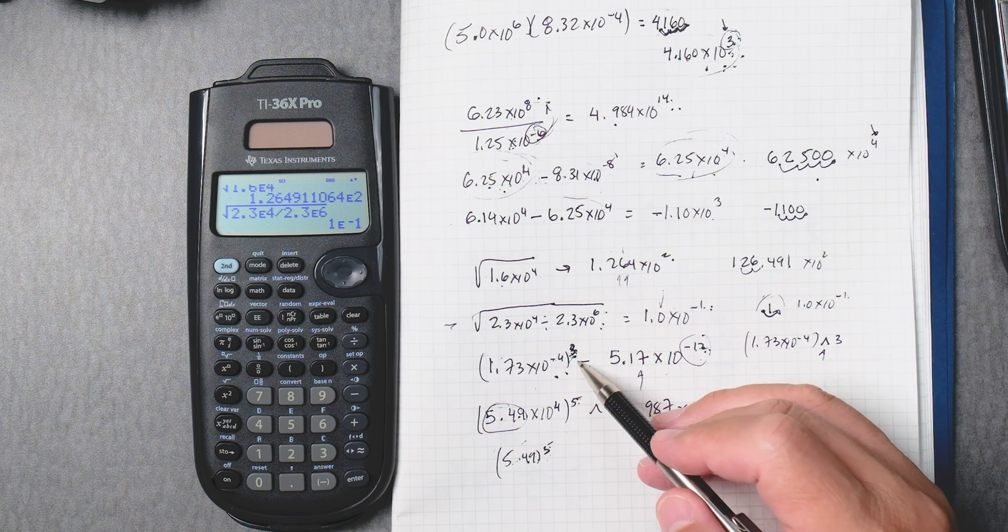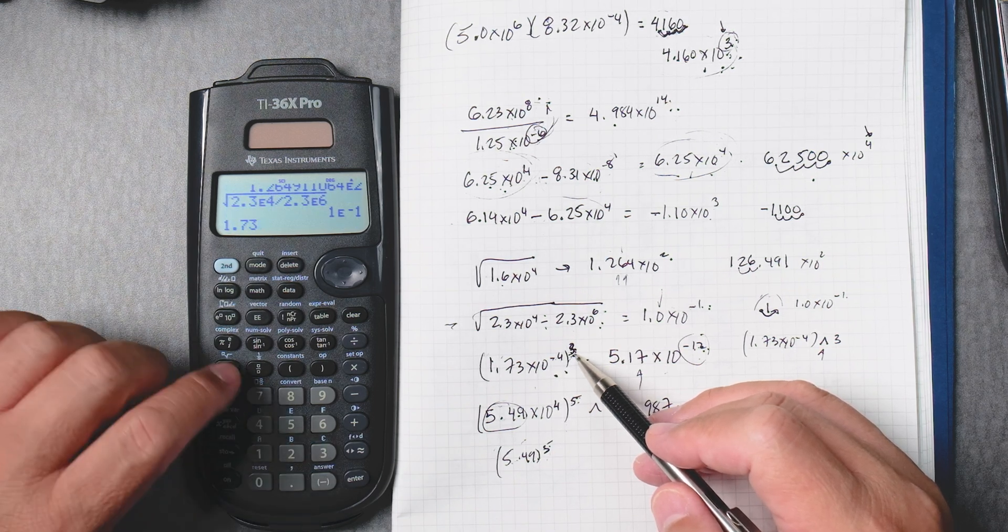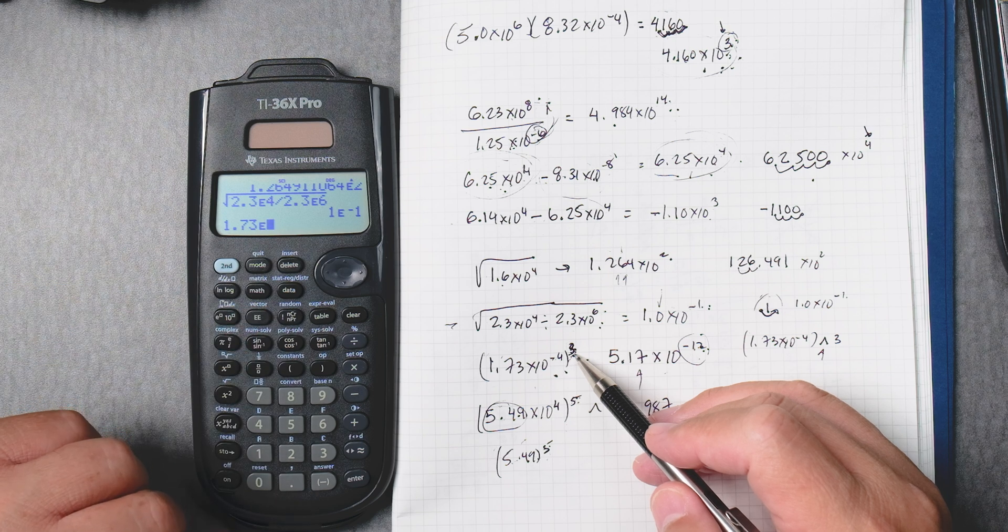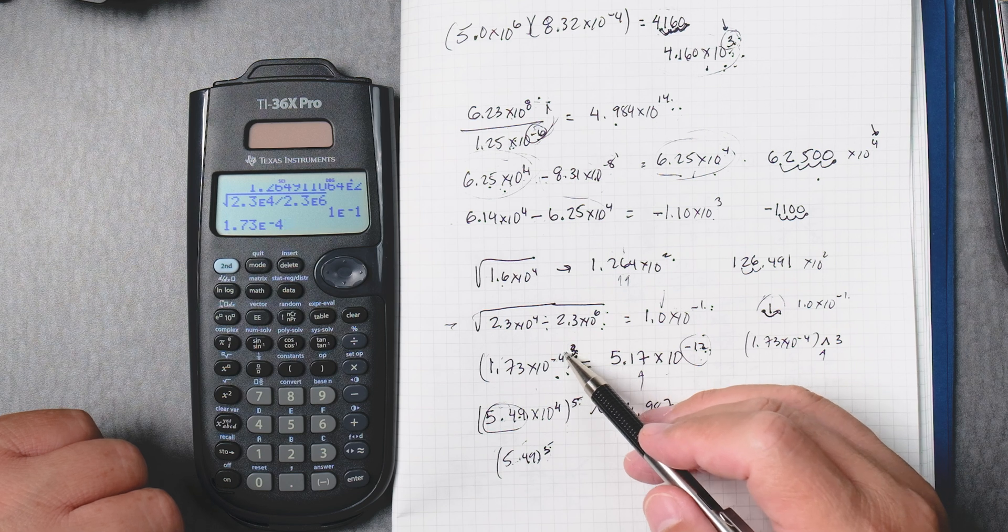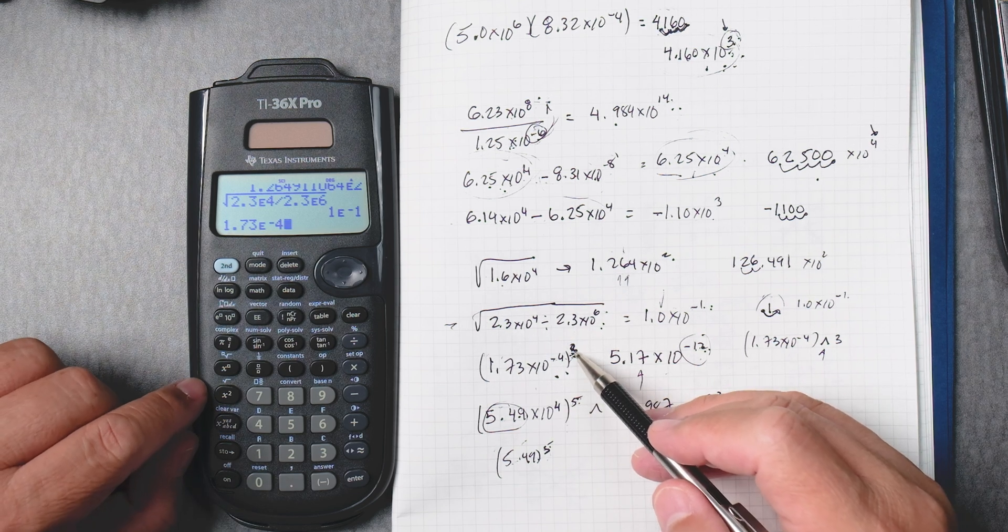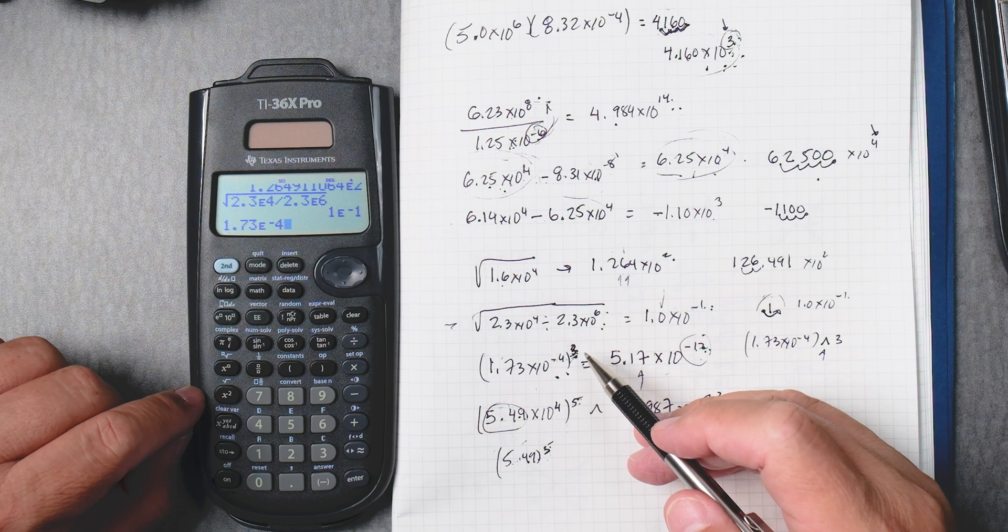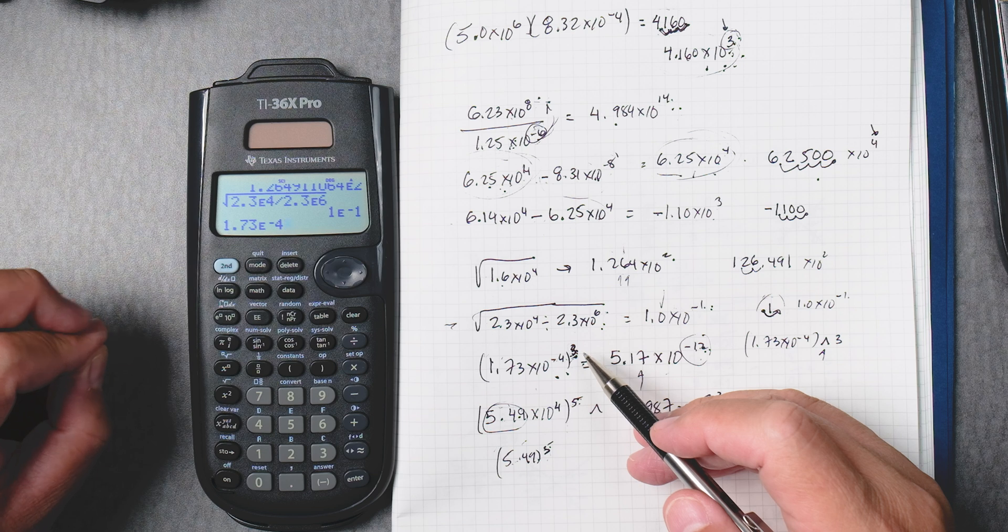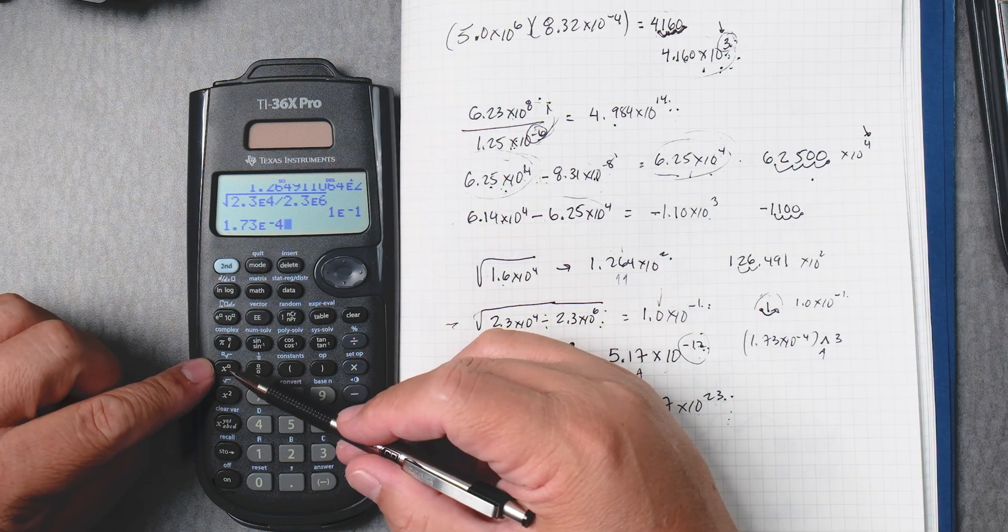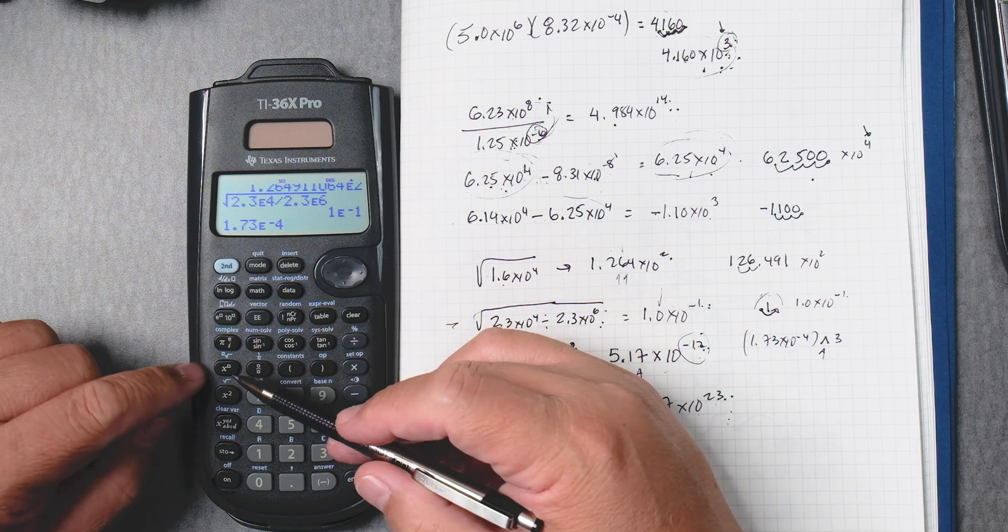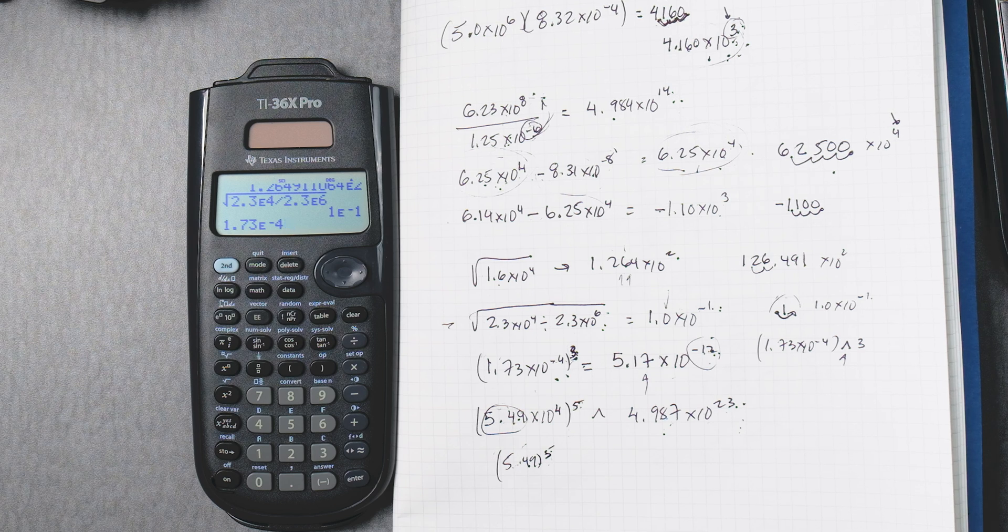Okay, let's do a powers one. 1.73 double E, and this is going to be negative 4. And then we want to take all that to the power of, to the power of 3. Now, in this calculator, let me see, where is it? It's right here, which is kind of a unique and weird way of putting this, but x to whatever power you want.